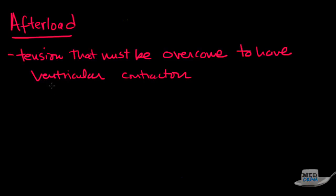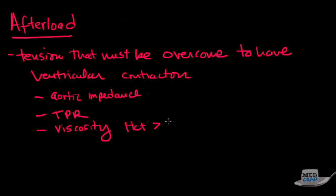So I want you to think about this as though it was the resistance to the heart contracting. Think about this as aortic resistance, aortic impedance. Think of this as the total peripheral vascular resistance. Also think about viscosity of the blood. So if you have a hematocrit that is greater than 55, think about that as being the problem.